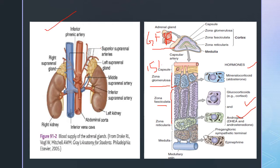The blood supply of this gland is provided by three arteries: the superior suprarenal arteries, the middle suprarenal artery, and the inferior suprarenal artery. The superior suprarenal artery arises from a branch of the inferior phrenic artery. The middle adrenal artery arises directly from the abdominal aorta. The inferior suprarenal artery is a branch of the renal artery on the same side.